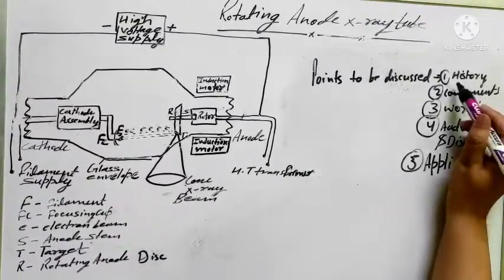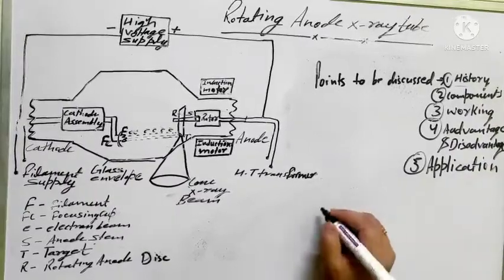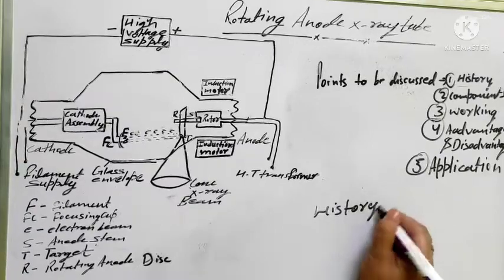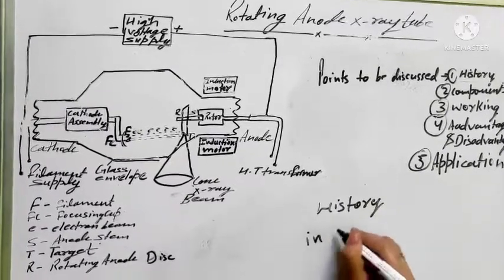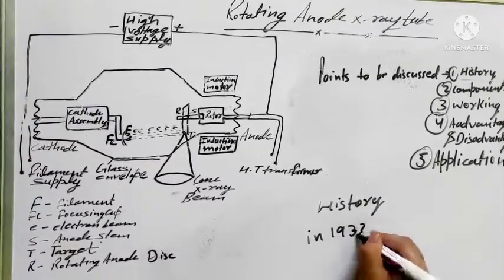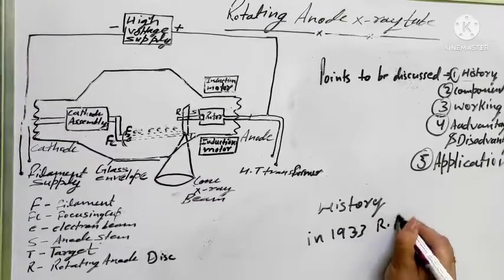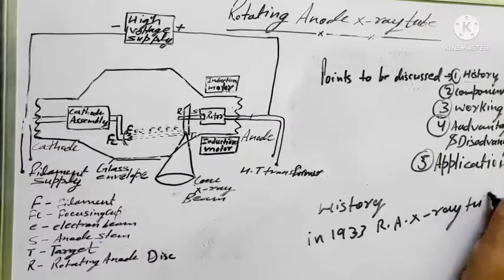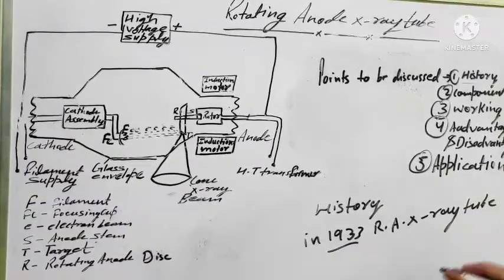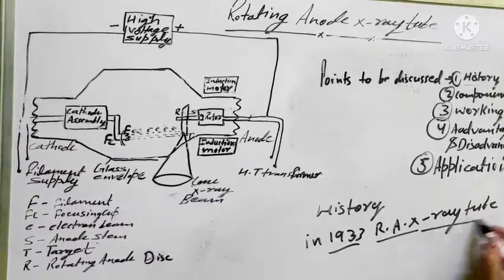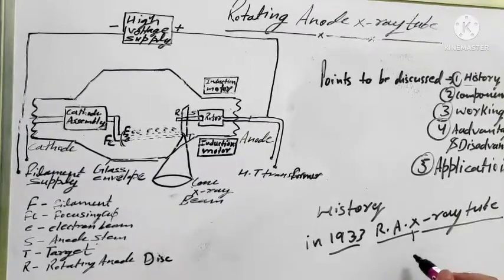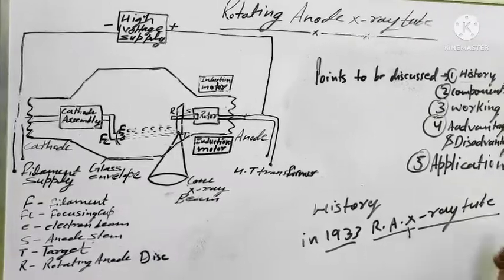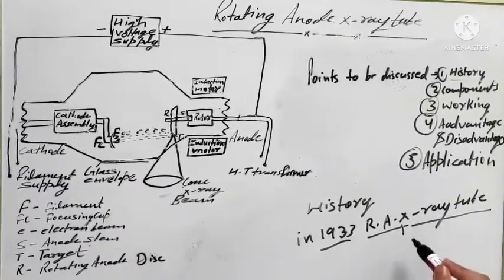Let's start with the short history of the rotating anode X-ray tube. In 1933, the rotating anode X-ray tube was invented. This tube became a standard tube design for diagnostic purposes.